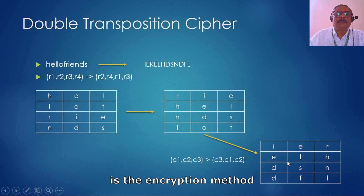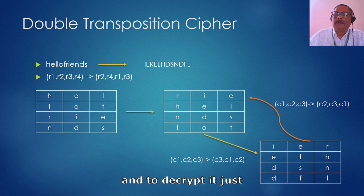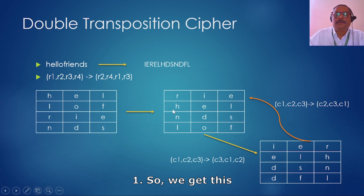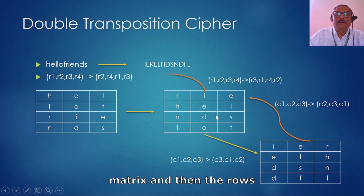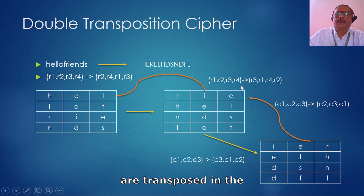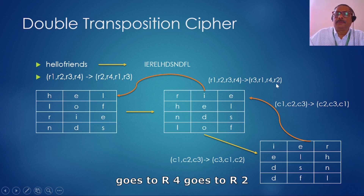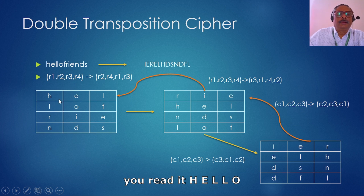To decrypt it, we reverse: column 1 goes back to column 2, column 2 goes to column 3, and column 3 goes to column 1. We get the intermediate matrix, and then the rows are transposed in reverse — row 1 goes to row 3, row 2 goes to row 1, row 3 goes to row 4, and row 4 goes to row 2. Finally, reading it back gives us 'hello friends.'